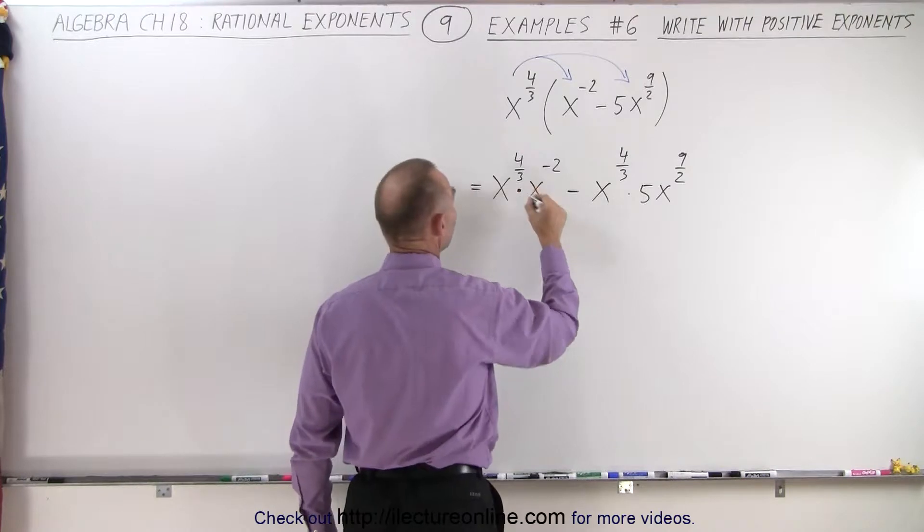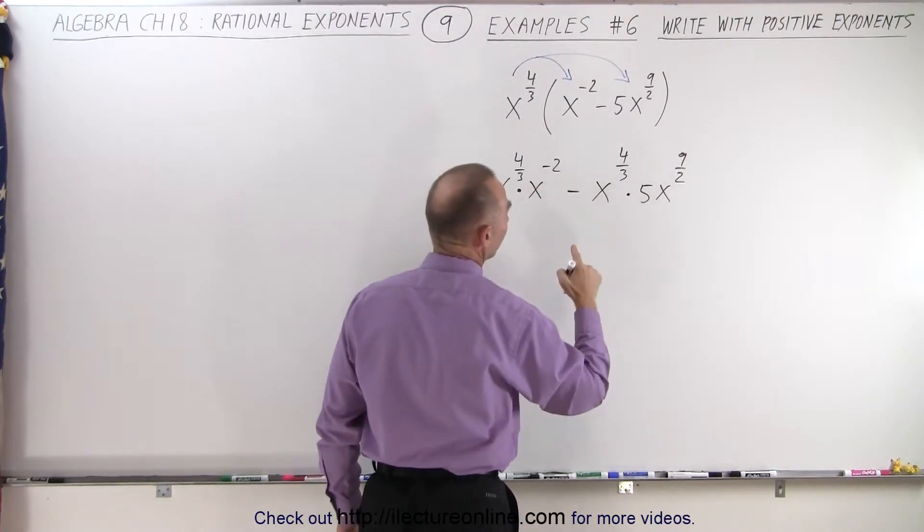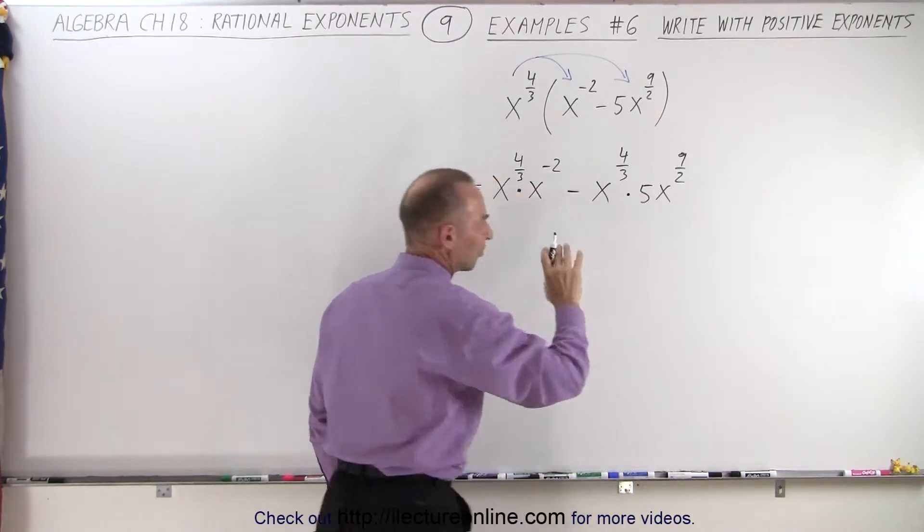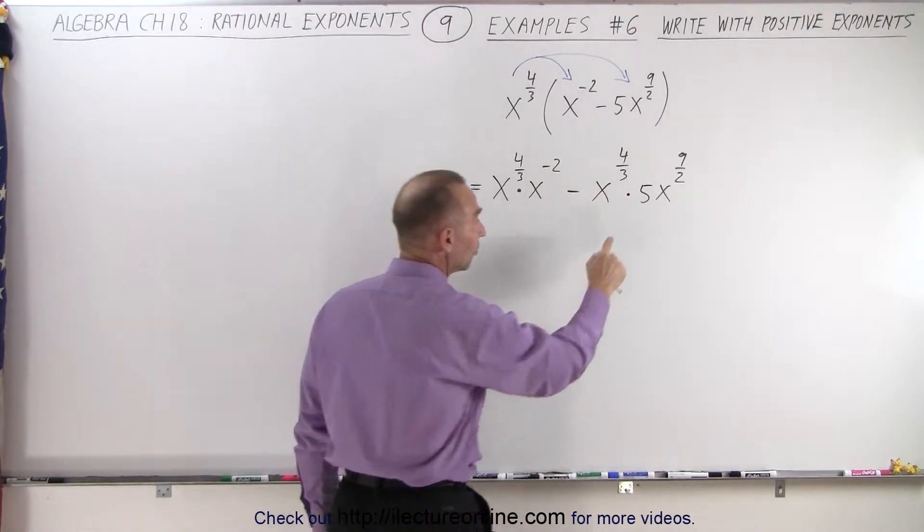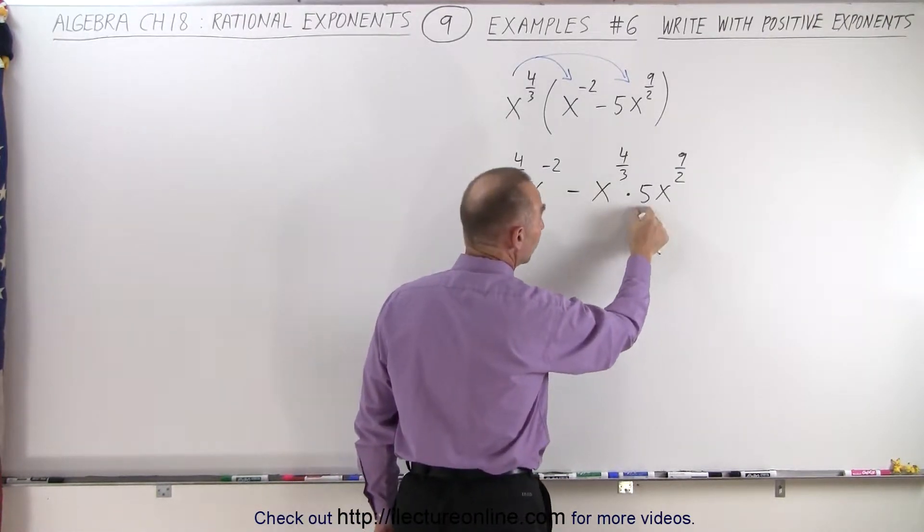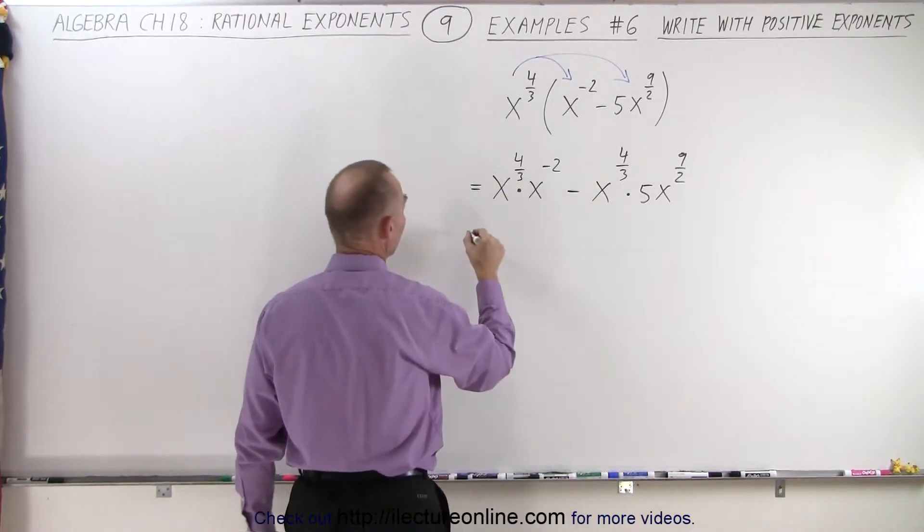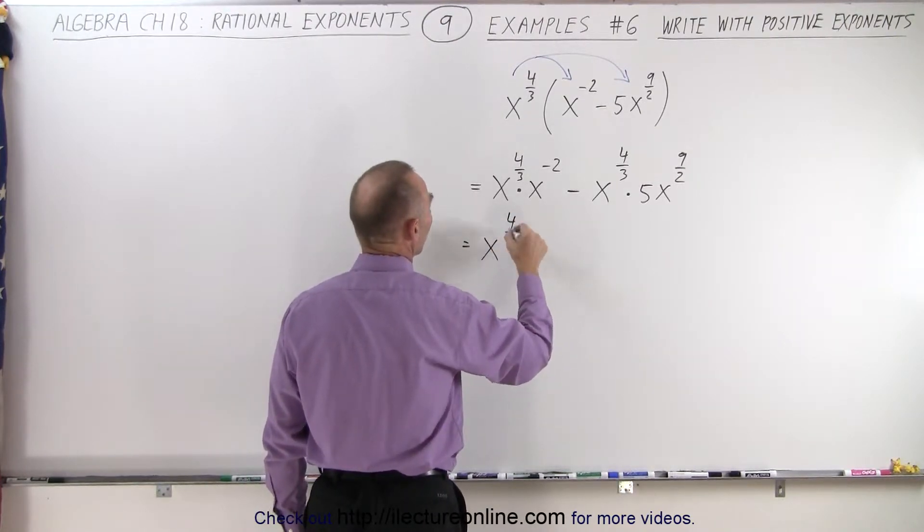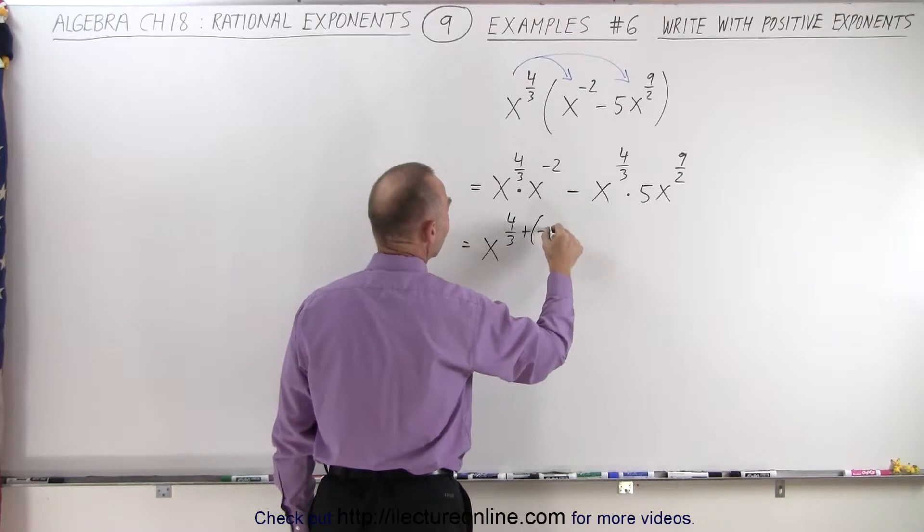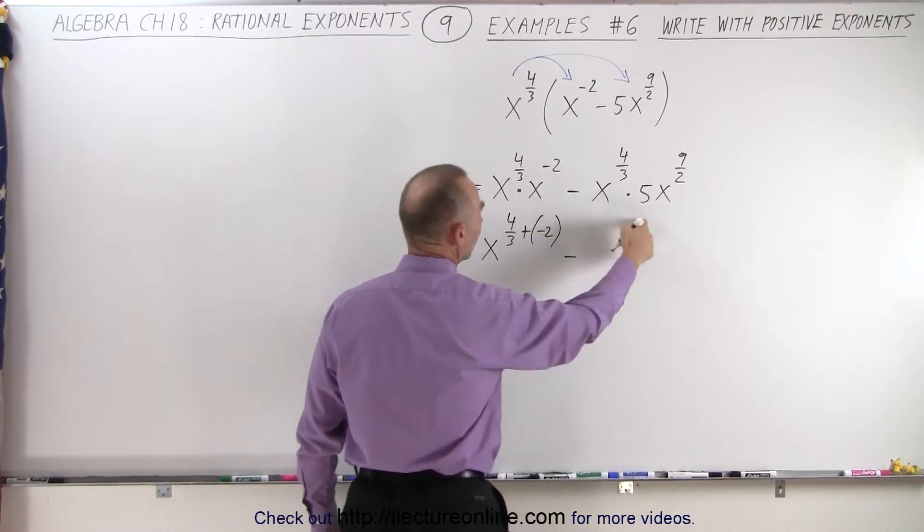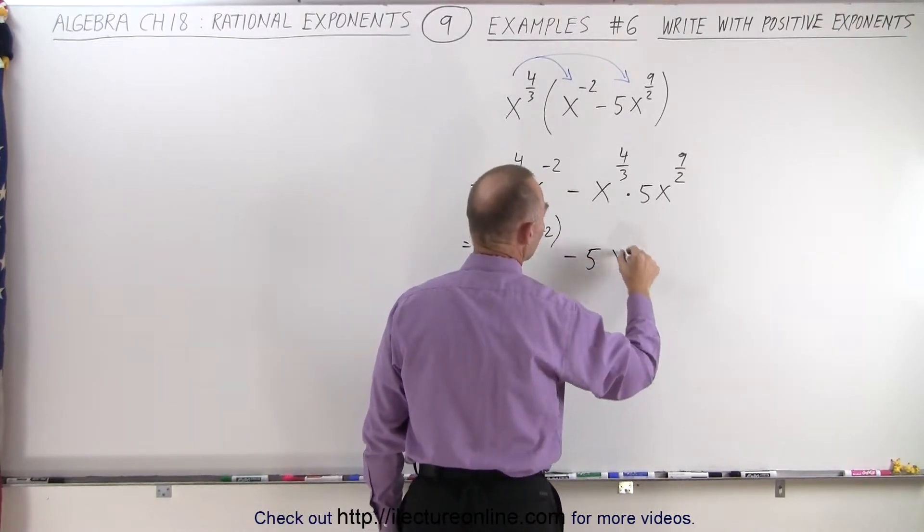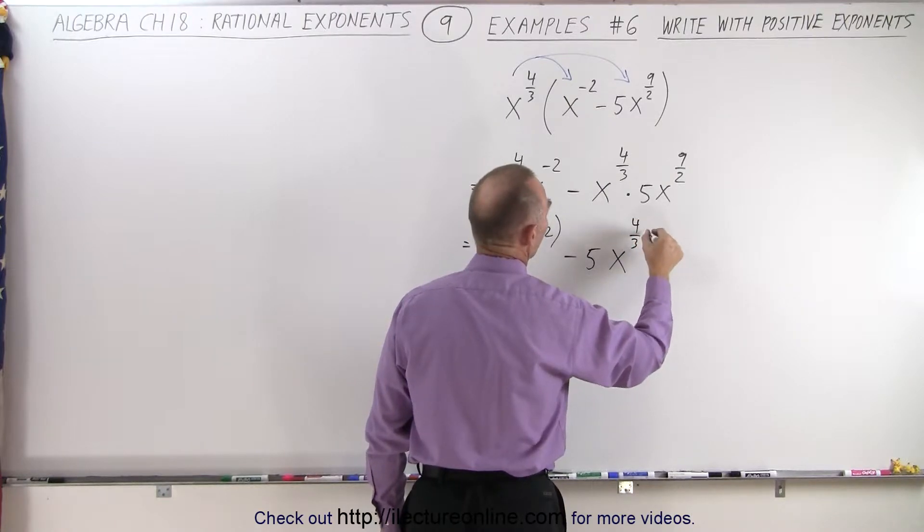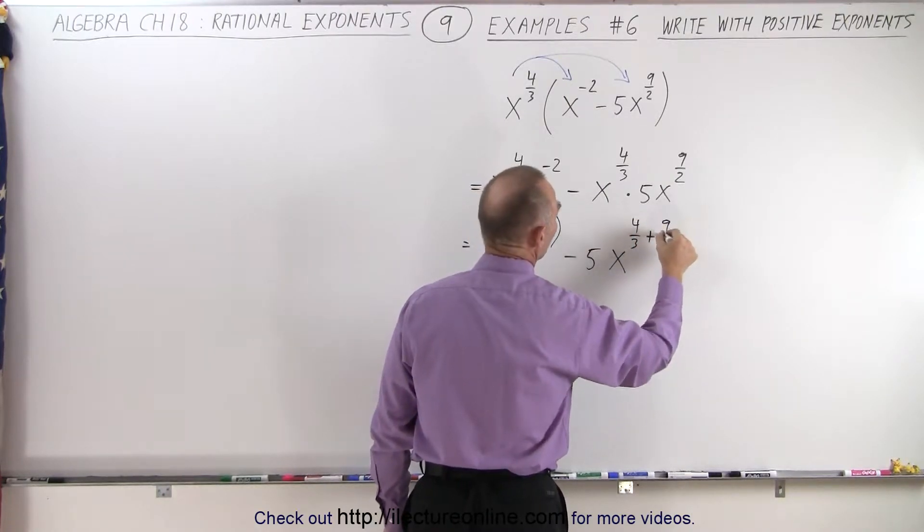Now notice we're multiplying and the bases are the same. You may say the bases are not the same, but they are because this is the numerical coefficient which can be placed in the front. So this can be written as x^(4/3 + (-2)) minus, put the 5 in front, x^(4/3 + 9/2).